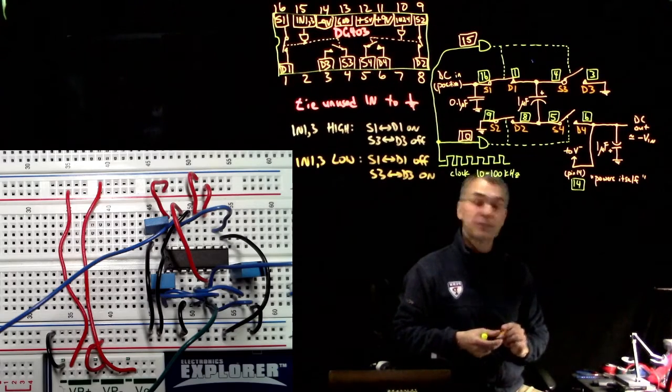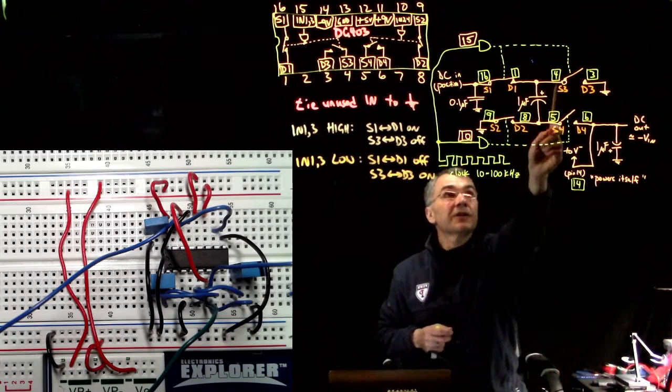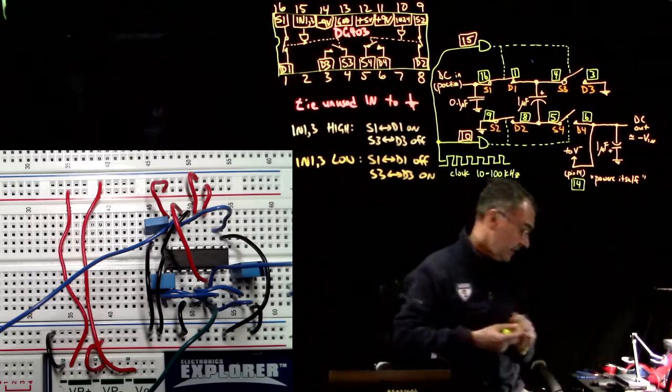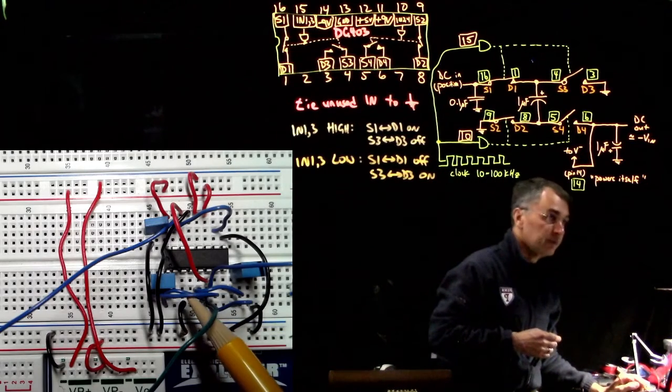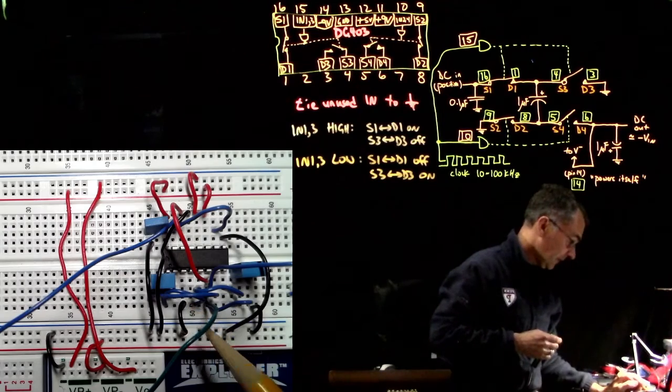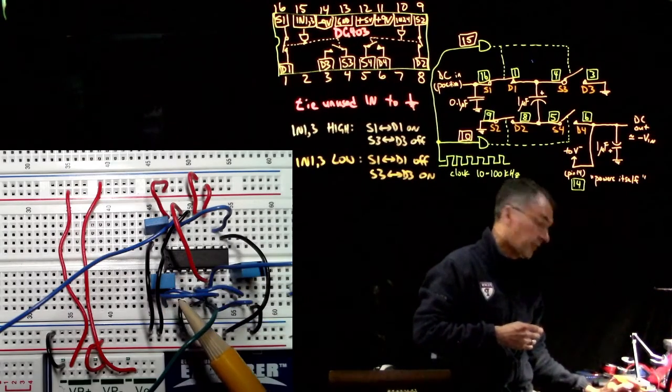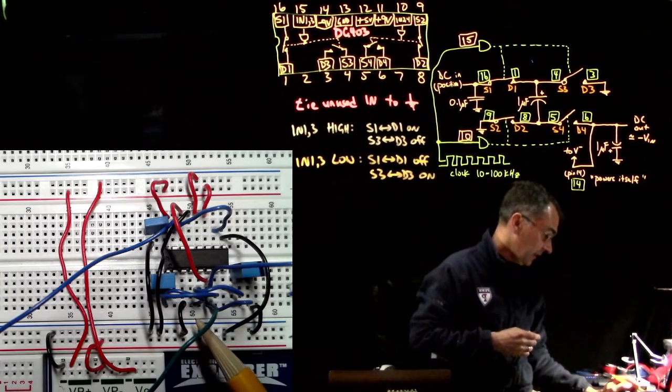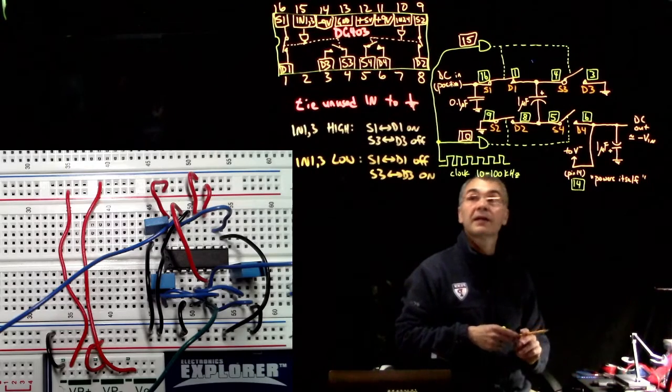Okay, so pin 1 should be connected to pin 4 and to this capacitor. So pin 1 is connected to pin 4 with this blue jumper, and it goes to one side of this capacitor. So the other side of this capacitor then goes with this other blue jumper over to pin 5, and then there's another jumper taking pin 5 over to pin 8.